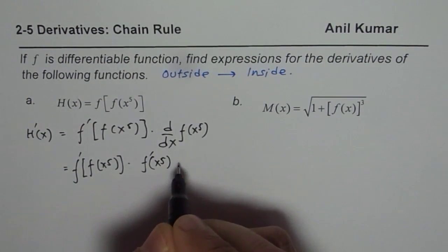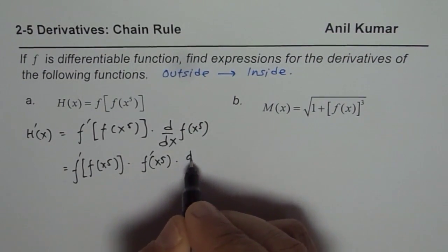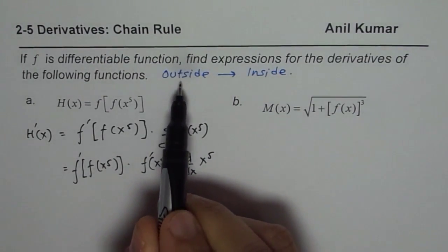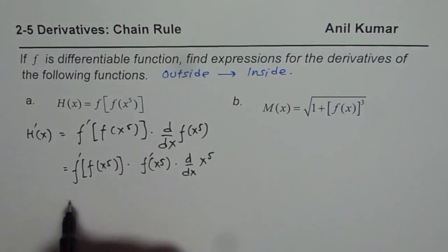So derivative of x^5 times d/dx of x^5. That is what I mean—move from outside to inside. I hope the concept is clear.